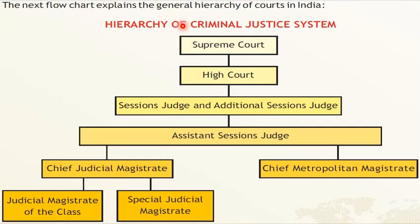Now let us look at the flowchart representation of the hierarchy of the criminal justice system in India. The Supreme Court is at the apex, followed by the High Court. Below the High Court are the Sessions Judges Court, then Assistant Sessions Judges. The Assistant Sessions Judges are further assisted by the Chief Judicial Magistrate and Chief Metropolitan Magistrate. The Chief Judicial Magistrate has two subdivisions: Judicial Magistrate of the First Class and Special Judicial Magistrate. This is the hierarchy of the criminal justice system, which handles cases involving criminal acts.